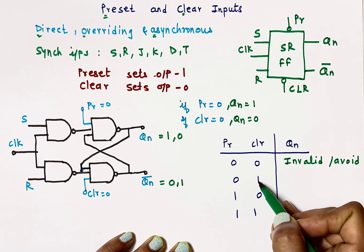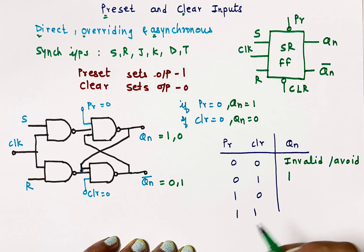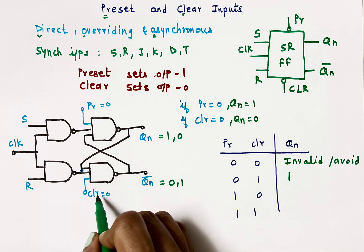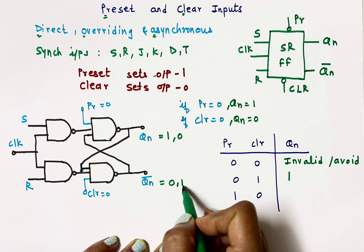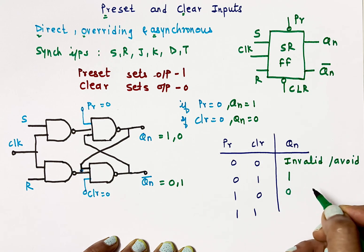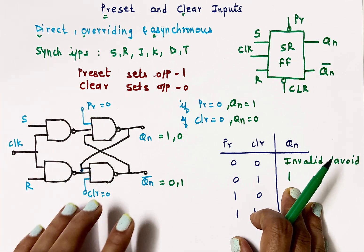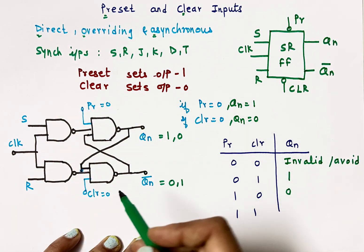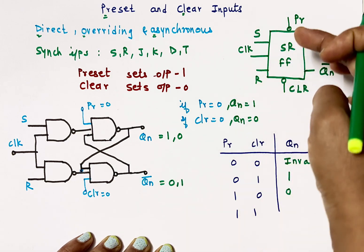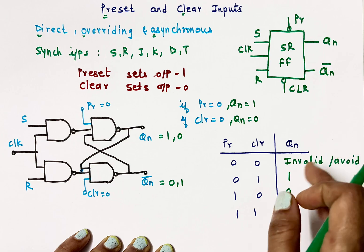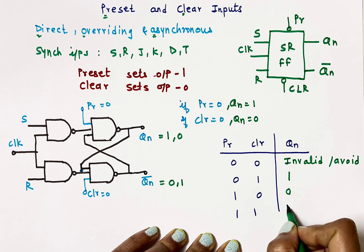When preset is 0 and clear is 1, the output becomes 1. When preset is 1 and clear is 0, the NAND gate output becomes 1, so Qn becomes 0. When both preset and clear are 1, the SR flip-flop acts as a normal SR flip-flop — the output Qn changes based on the values of S and R. These preset and clear inputs are used in every flip-flop: JK, D, and T flip-flops.